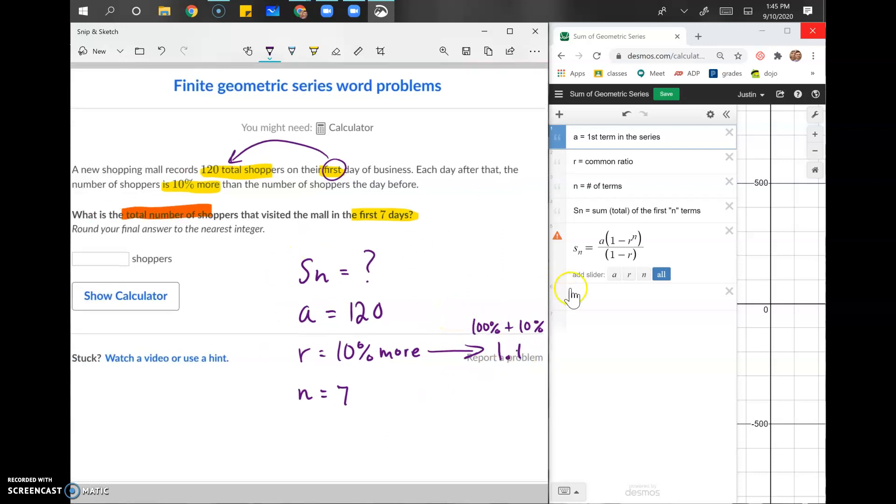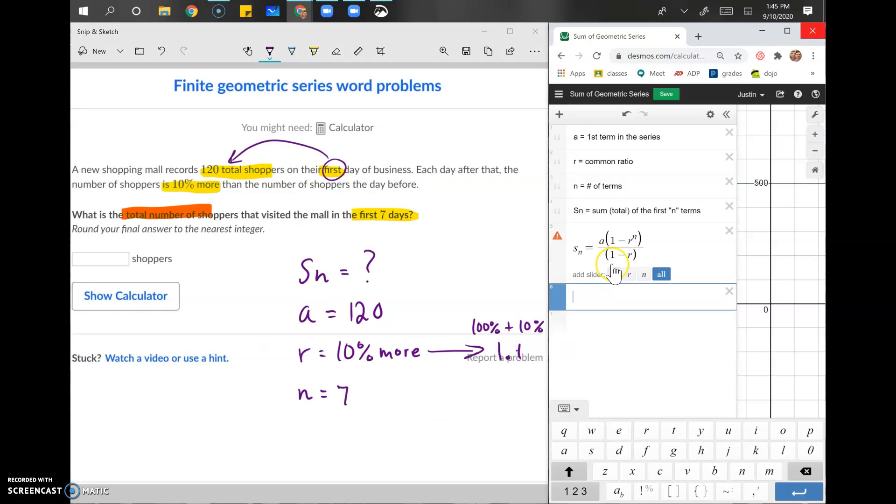All right. Now I'm going to just put in the information in this formula. So we know that we don't know S of N. We're going to leave that. We know that A is 120. We know that R is 1.1. And we've got two R's, so we've got to do that twice. And then we know that N is 7.